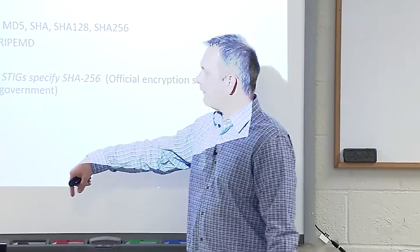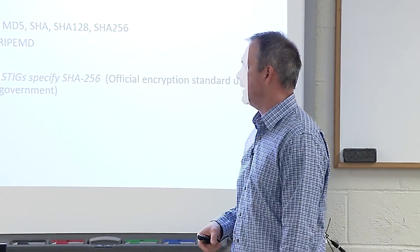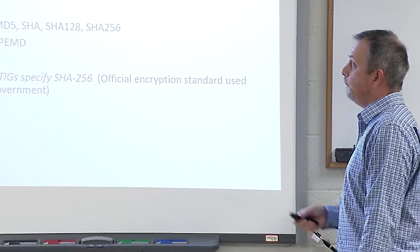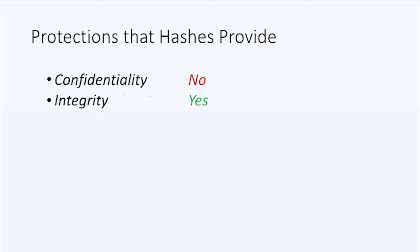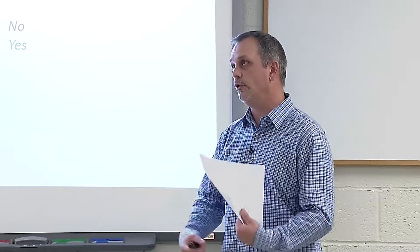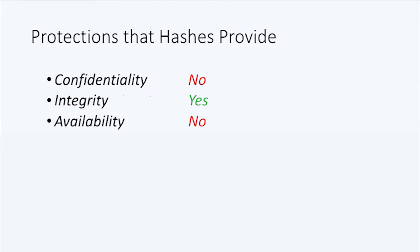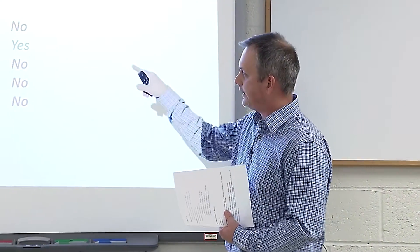Within the last decade, the federal government, DISA (the Defense Information Systems Agency), and NIST (the National Institute of Standards and Technology) made the shift from MD5 to SHA-256 because of collisions identified in MD5. Going back to the five protections cryptography can provide: hashes cannot provide confidentiality, availability, authentication, or non-repudiation. They can only prove integrity, because we can hash a message and prove the message was the same as originally sent by computing the hash value again.